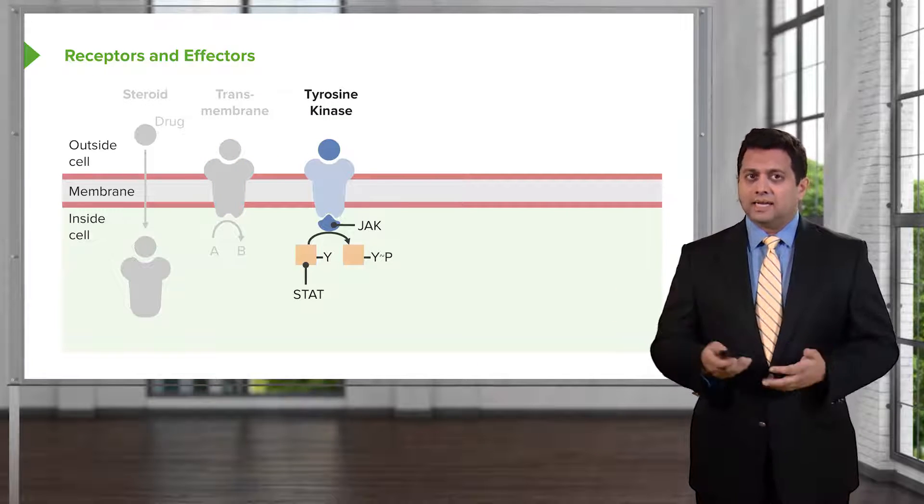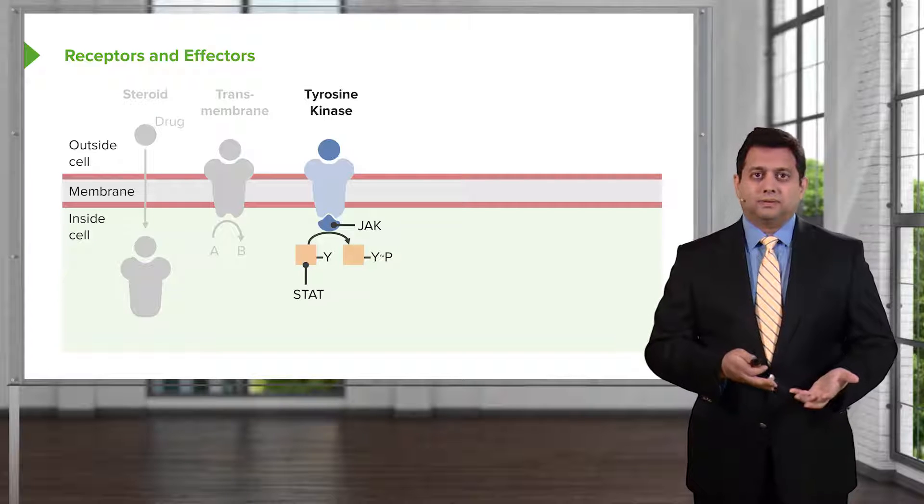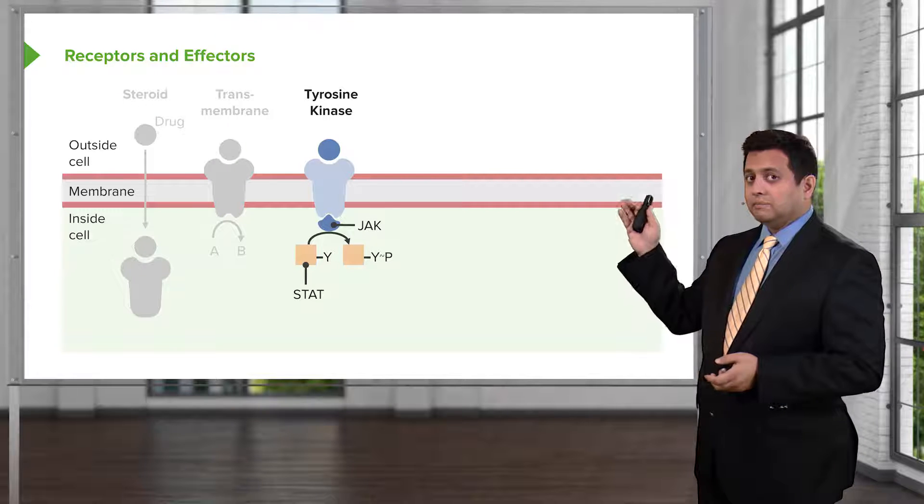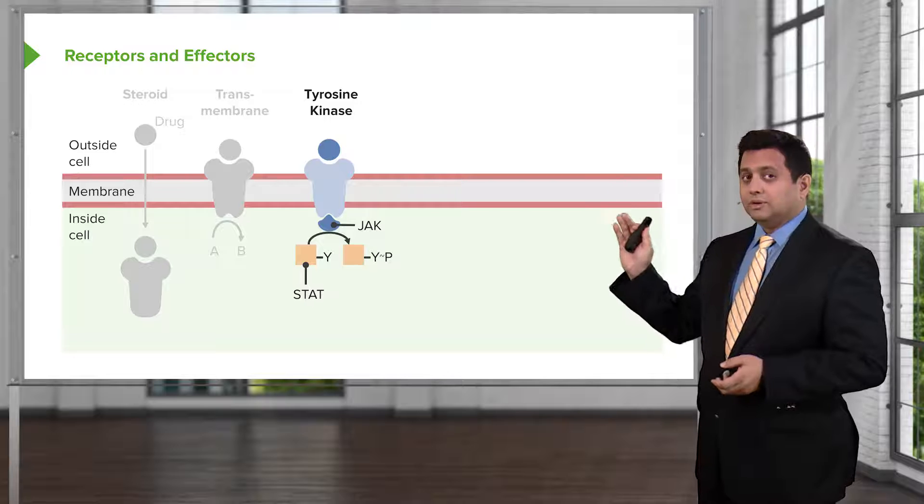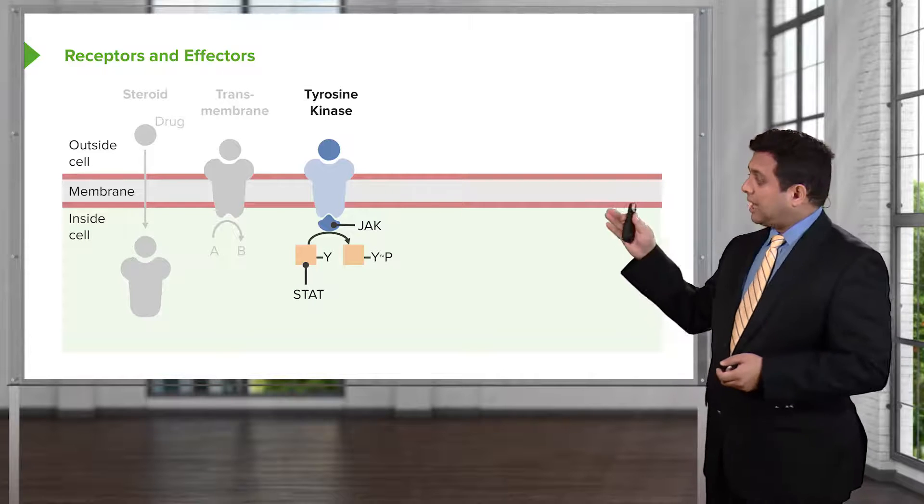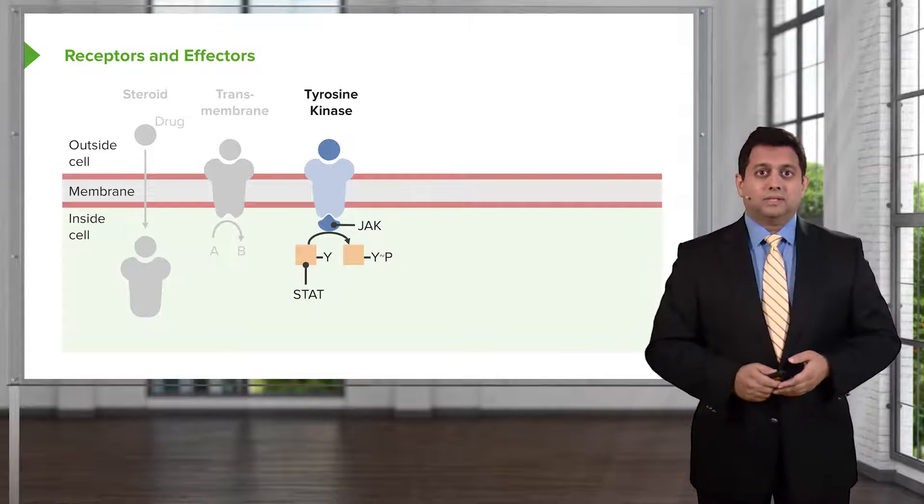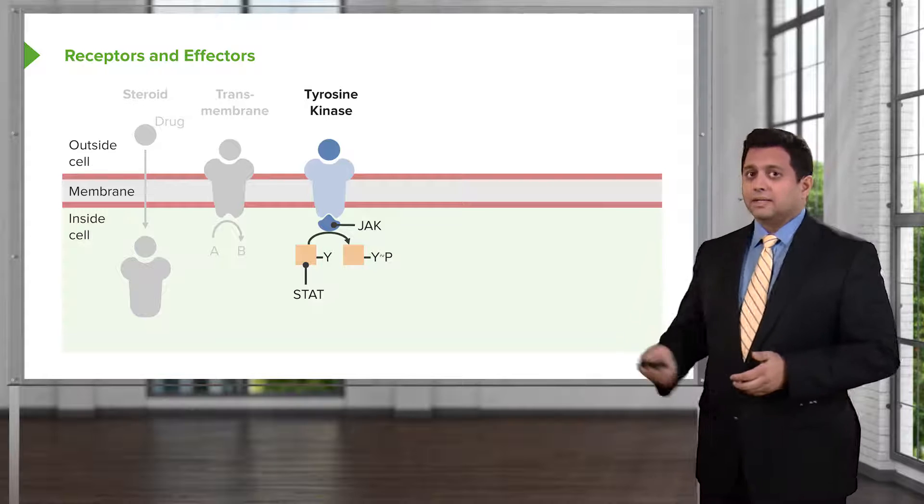Tyrosine kinase is a specific kind of receptor-effector system where the tyrosine kinase molecule binds to the drug on the surface, and the jack portion of that receptor complex causes a change within the cell.